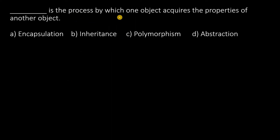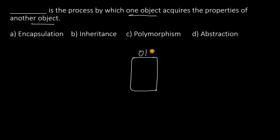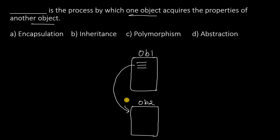Dash is a process by which one object acquires the properties of another object. That means, take an object ob1 and another object ob2. Whatever properties ob1 is having, all those properties will come to ob2 also. So, this process is called inheritance. The answer is inheritance.